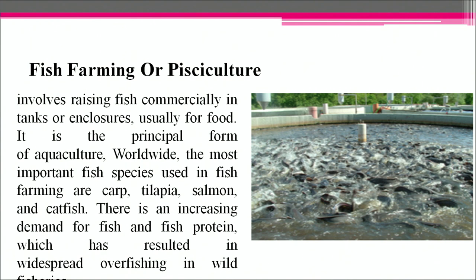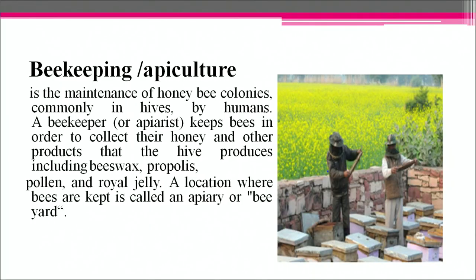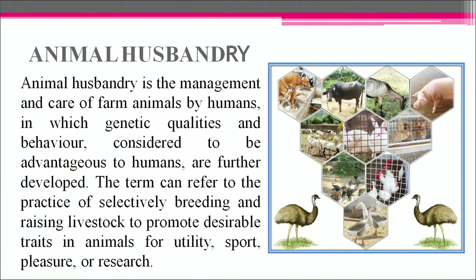Fish farming is the principal form of aquaculture worldwide. The most important fish species used in fish farming are carp, tilapia, salmon and catfish. There is an increasing demand for fish protein which has resulted in widespread overfishing in wild fisheries. Apiculture or beekeeping is the maintenance of honey bee colonies, commonly in hives by humans. A beekeeper collects honey and other products including beeswax, propolis, pollen and royal jelly. A location where bees are kept is called an apiary or bee yard. Animal husbandry is the management and care of farm animals, dealing with selectively breeding and raising livestock to promote desirable traits for utility, sports, pleasure or research.